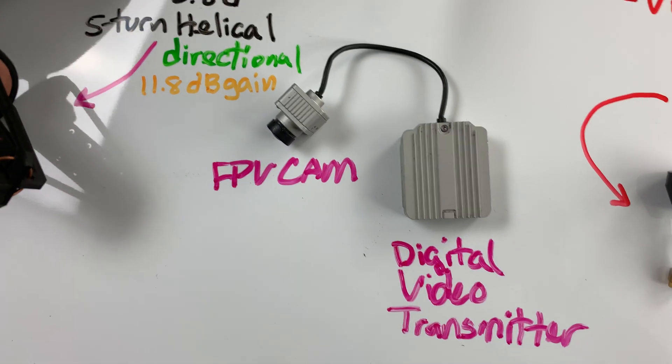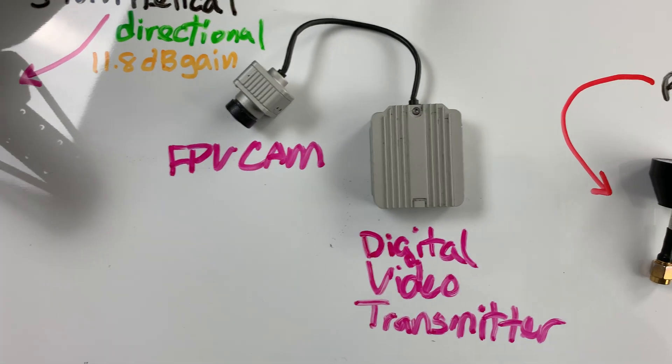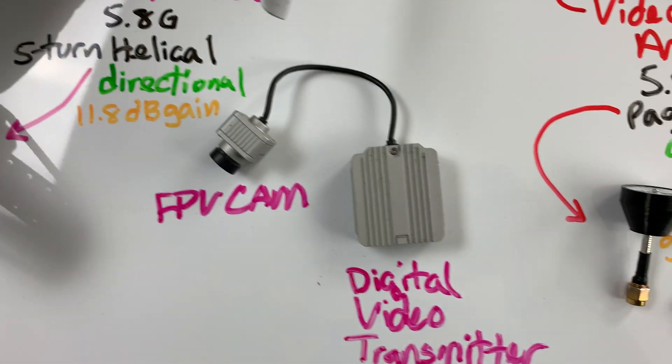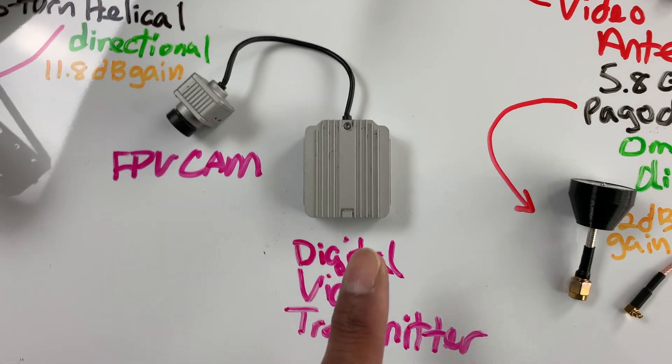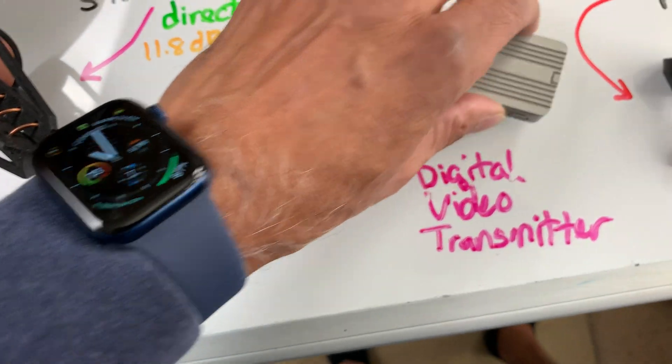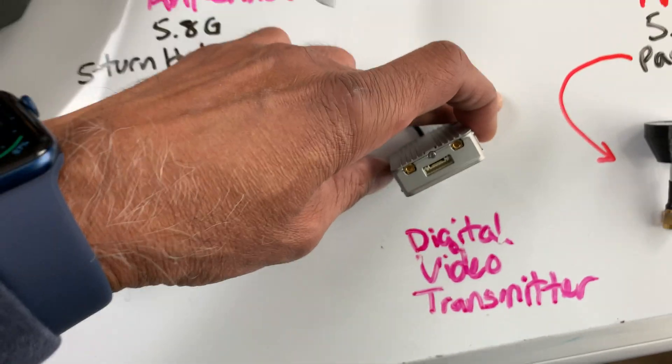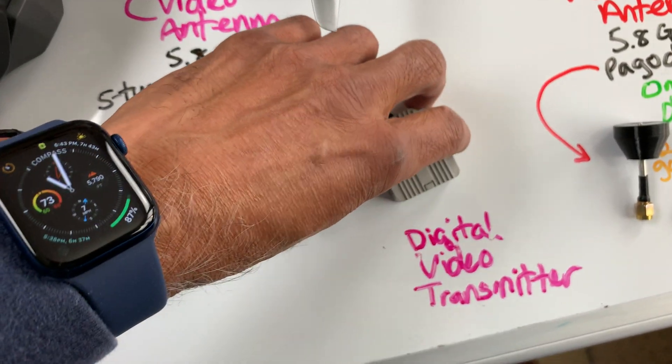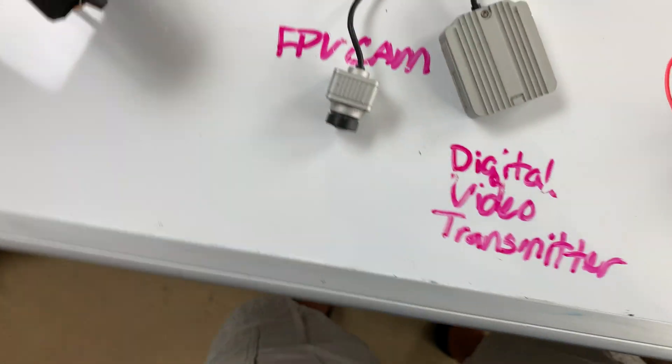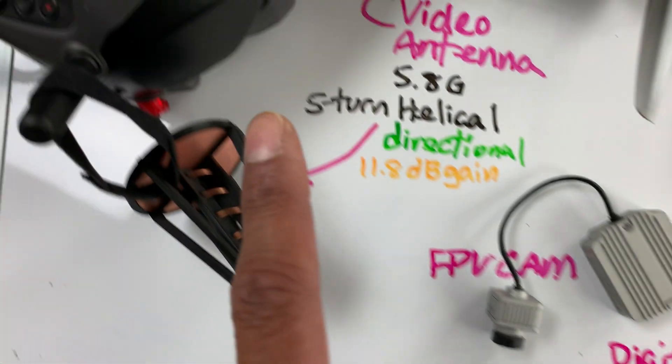Right here is a digital video transmitter. And I did not write this down, but it is a 5.8 gigahertz as well. This happens to be a DJI model. And in the back here, there's like a couple ports for antennas. These are the MMCX antennas. And here's the FPV cam right here. So it's digital video being transmitted back to the goggles.